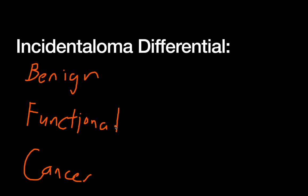Functional lesions are based on those layers of the adrenal gland we looked at before. A functional adenoma of the glomerulosa layer would secrete aldosterone and cause hypertension. One of the fasciculata would secrete cortisol and cause Cushing syndrome. The reticularis would secrete DHEAS and cause virilization. And then a tumor of the adrenal medulla — which has the special name pheochromocytoma — would secrete epinephrine and cause intermittent hypertension, headaches, flushing, et cetera.